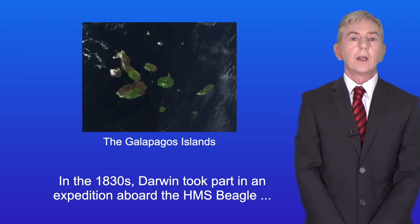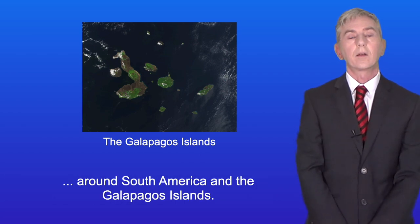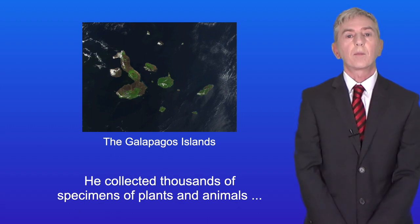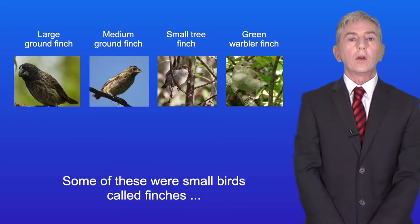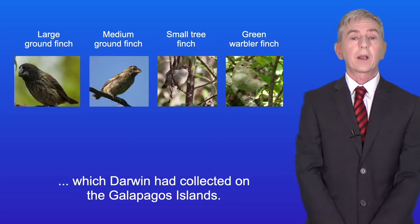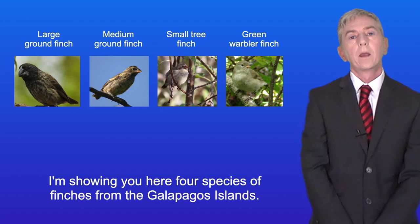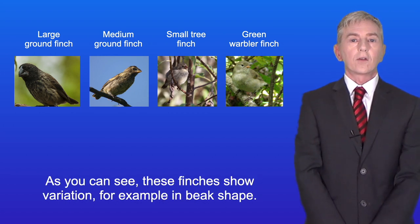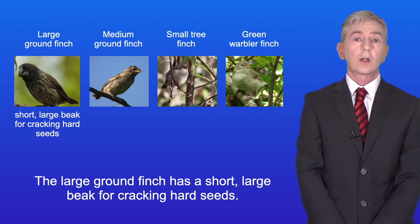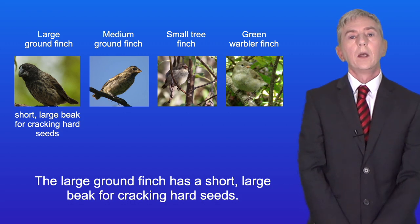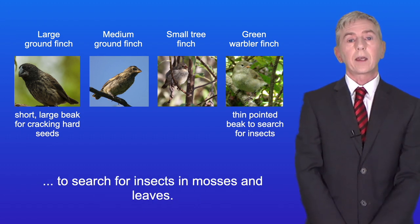In the 1830s Darwin took part in an expedition aboard the HMS Beagle around South America and the Galapagos Islands. He collected thousands of specimens of plants and animals and sent them home to the UK. Some of these were small birds called finches which Darwin had collected on the Galapagos Islands. These finches show variation, for example in beak shape. The large ground finch has a short large beak for cracking hard seeds, whereas the green warbler finch uses its thin pointed beak to search for insects in mosses and leaves.